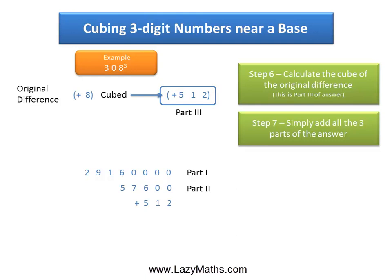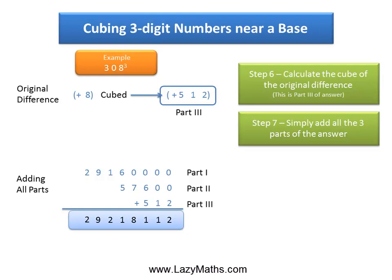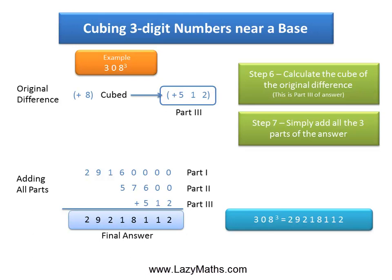Now because all the parts are positive, write down all of them and simply add them together to get the final answer. The final answer is 29,218,112 — in other words, 308 cubed equals 29,218,112. Thank you.